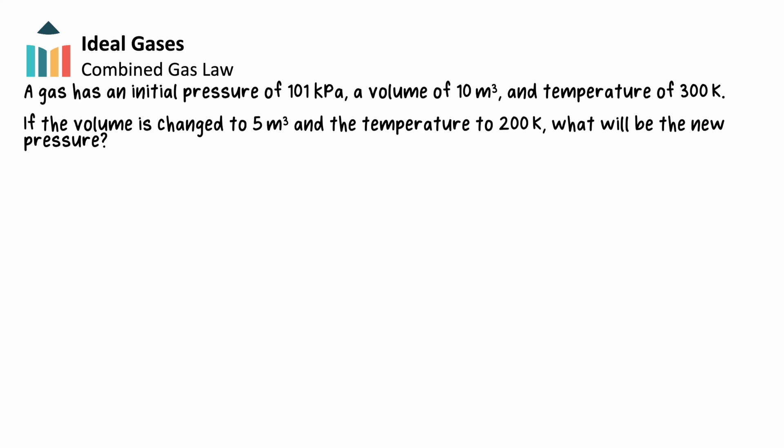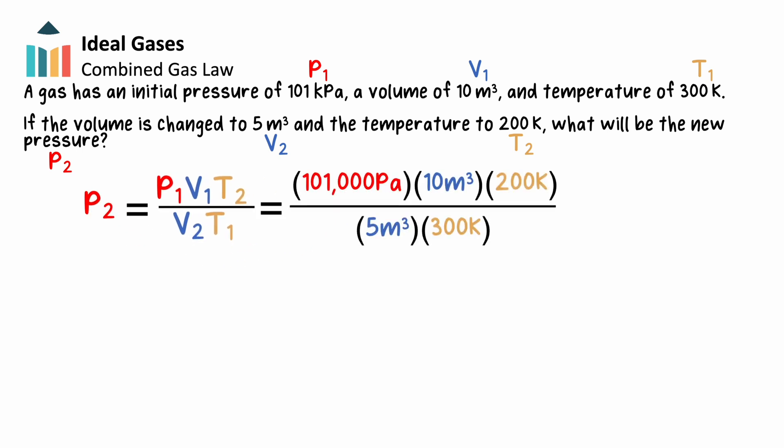Well, in this problem, pressure, volume, and temperature are all changing. In fact, we can identify each variable within our question. This means we'll need to use our combined gas law. To start, we'll rearrange the equation to solve for P2, the new pressure of the gas inside the container. From there, we can plug in values for our variables, being sure to convert our pressure into pascals, and we find that the final pressure in our container equals 135,000 pascals.